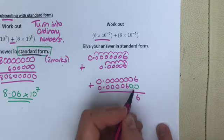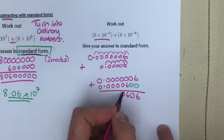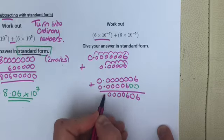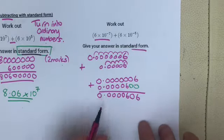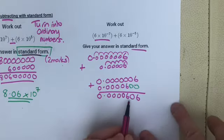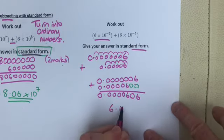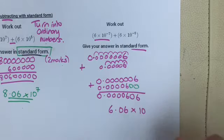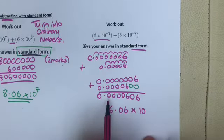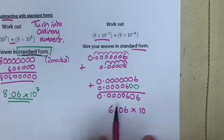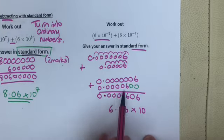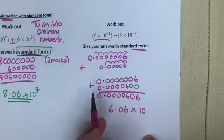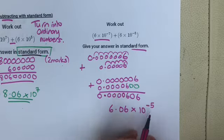Fill in the zeros and add them. Then turn it to standard form - that'll be the second mark. Number between 1 and 10: 6.06 times 10 to the power of... remember if it's a small number it's going to be a negative power. Count from where the decimal point is to where you put it: 1, 2, 3, 4, 5 - so this is going to be times 10 to the minus 5.